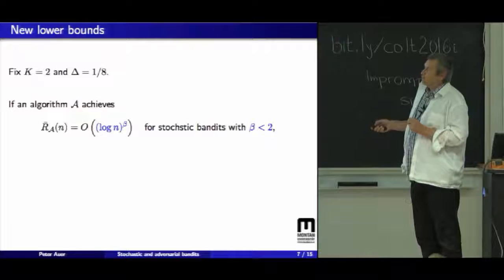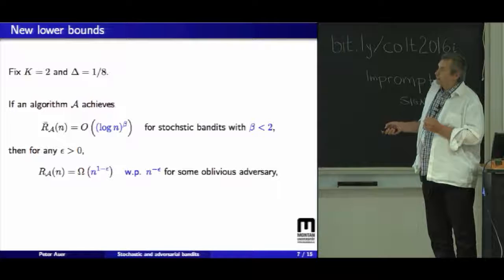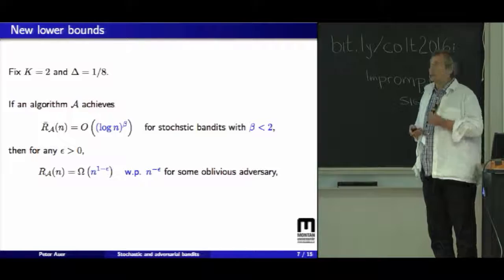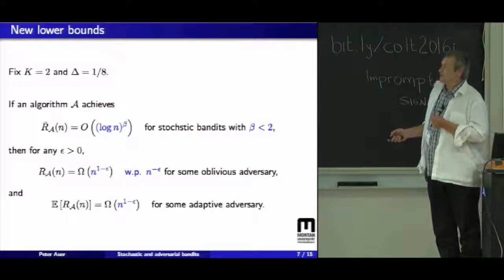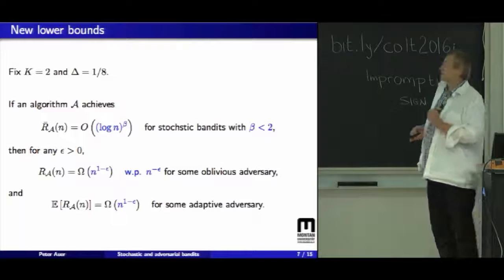So the first part of the answer is, if we have an algorithm which has a smaller regret, so log n to the beta, and beta smaller than 2, then there are bandit problems such that the algorithm suffers n², so almost linear regret, with probability n to the minus epsilon. So we don't get high probability bounds, which are square root n, and if the adversary is allowed to be adaptive, we can also show that the expected regret is almost linear. So which means that the square is actually necessary to get high probability bounds or to get bounds on the expected regret for adaptive adversaries.